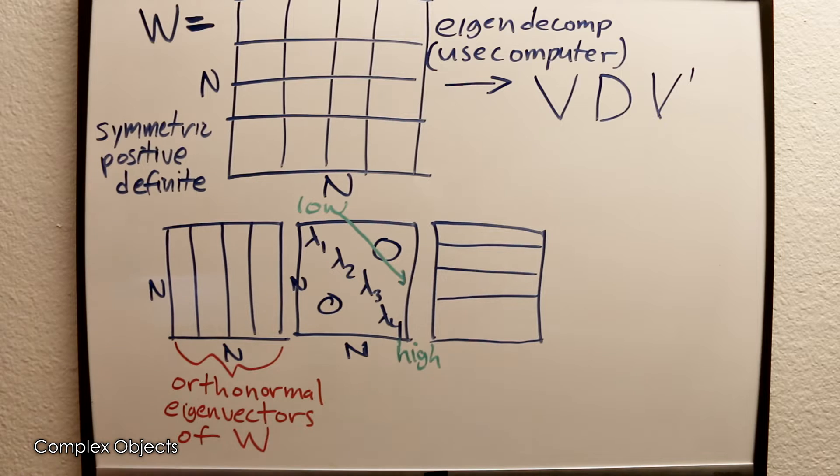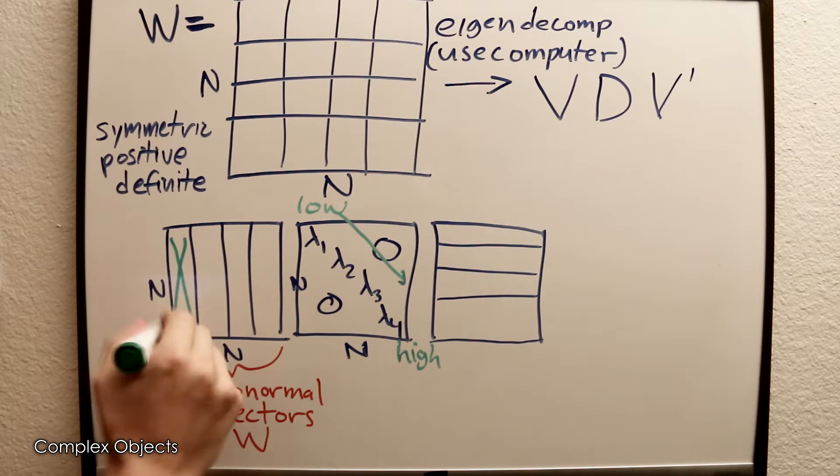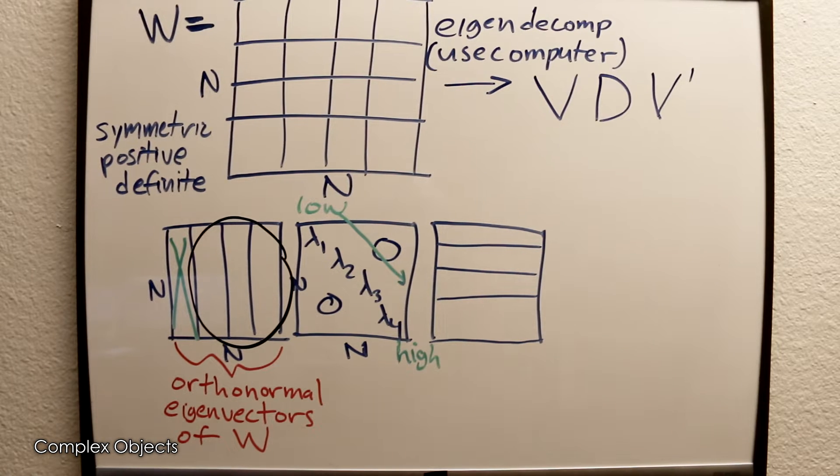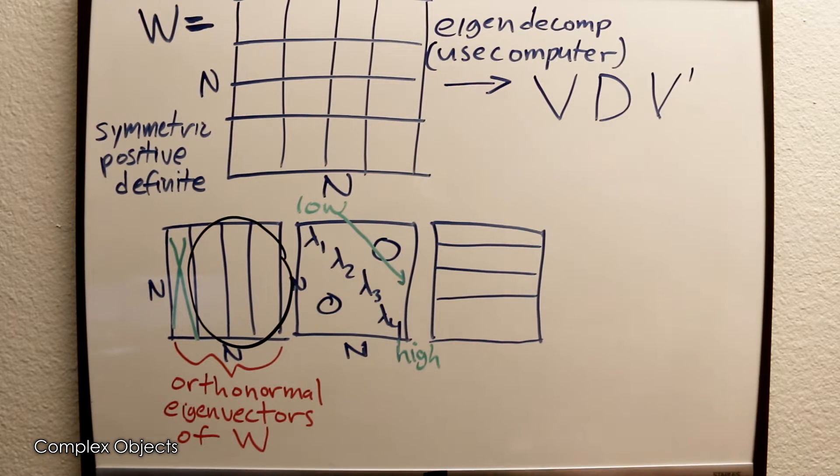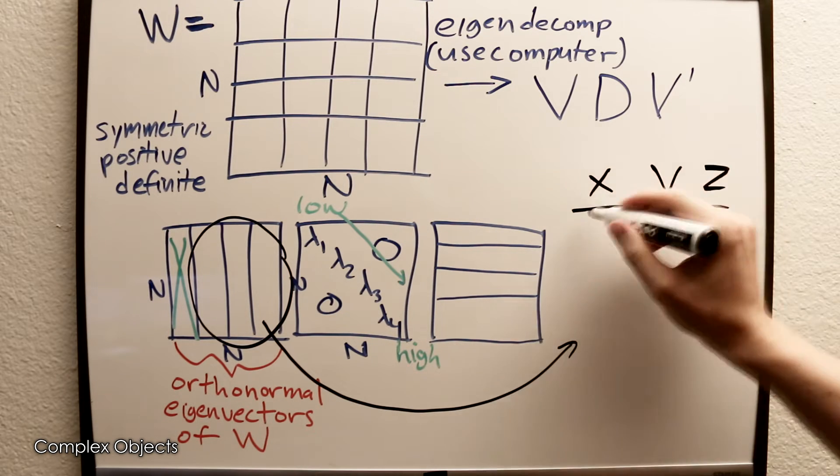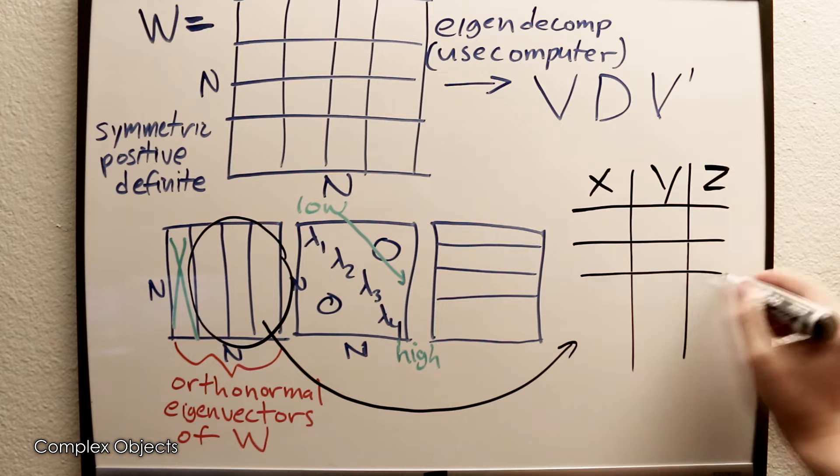Once you have that matrix of eigenvectors going down the columns V, you're essentially done. What you can do is just truncate V and take the eigenvectors corresponding to the highest eigenvalues. If you truncate it to say three of the columns, then you have a set of points in three dimensions.